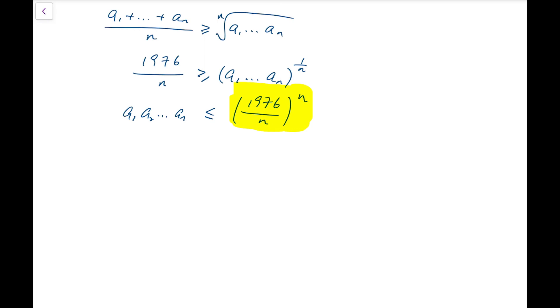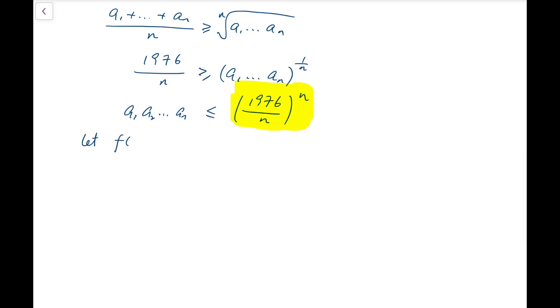At this point, I'm going to use calculus by letting the function f to be equal to 1976 over x, and the whole thing to the power x, and then I'm going to rewrite the over x into x to the power minus 1, and the whole thing to the power x. For functions of this form, which means having the variable at the index, we usually rewrite the base in terms of exponential constant e.